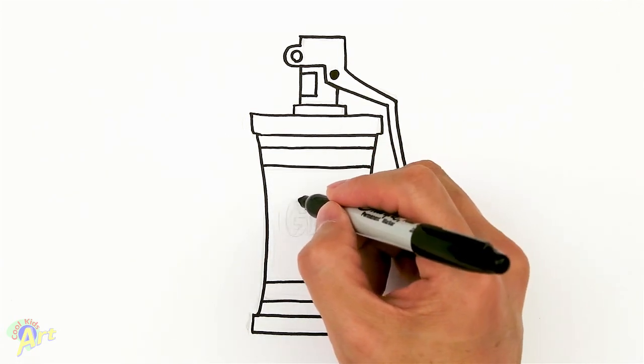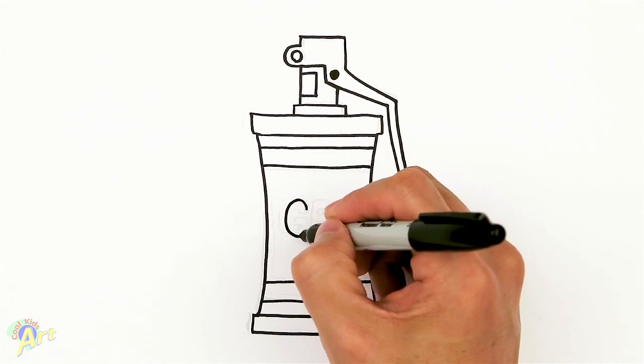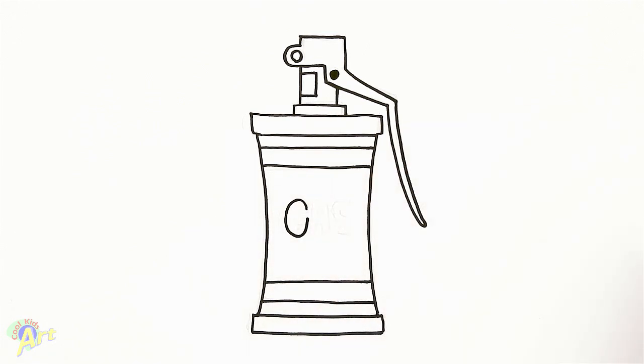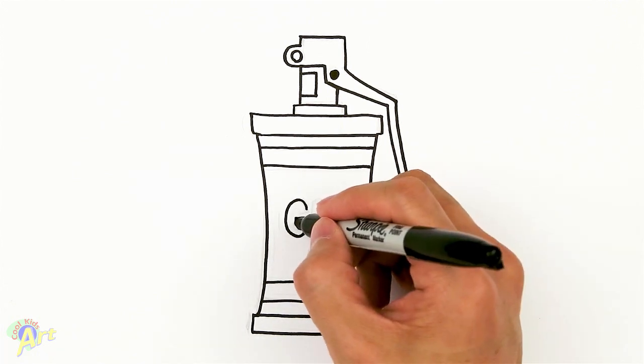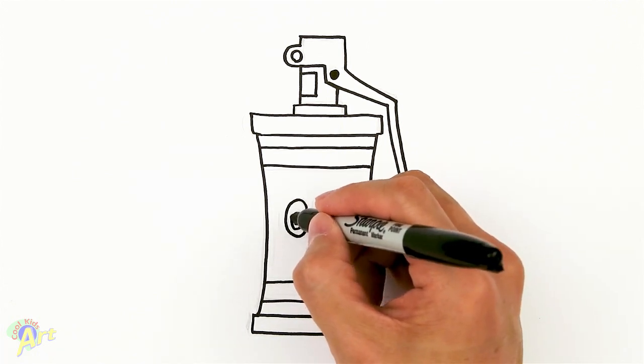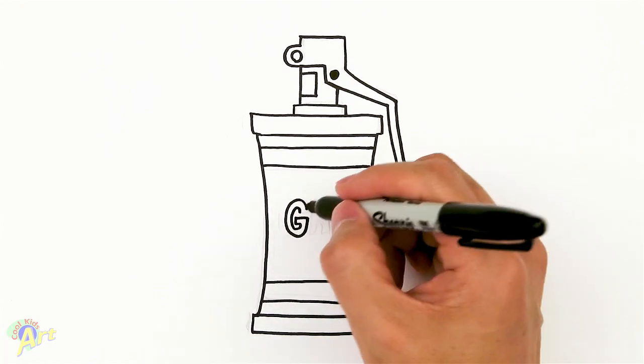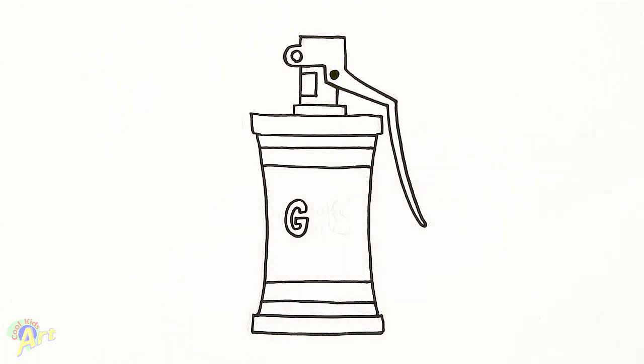So this is going to be the G. So just go across like this. And then come in. And now draw the inside, just give it a little bit of thickness. Come back out. Close it off.